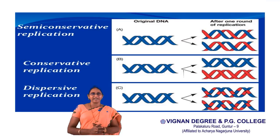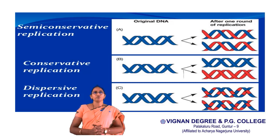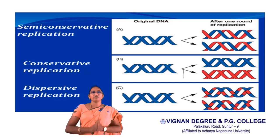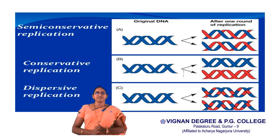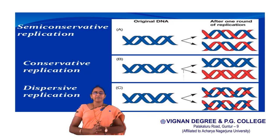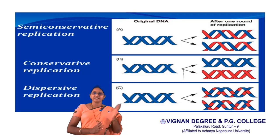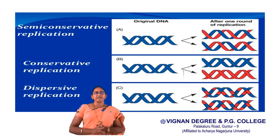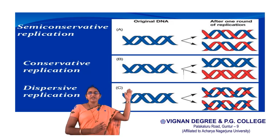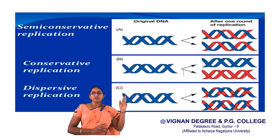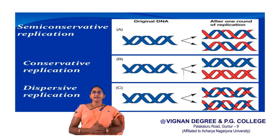Coming to semi-conservative replication — in this session we are going to study the proof for this. The definition is: the double-stranded DNA separates and each strand undergoes replication. That means each strand in the duplex DNA acts as a template and synthesizes a new daughter strand of DNA. The result is two daughter DNA molecules, each containing one original (parental) strand and one newly synthesized daughter strand.